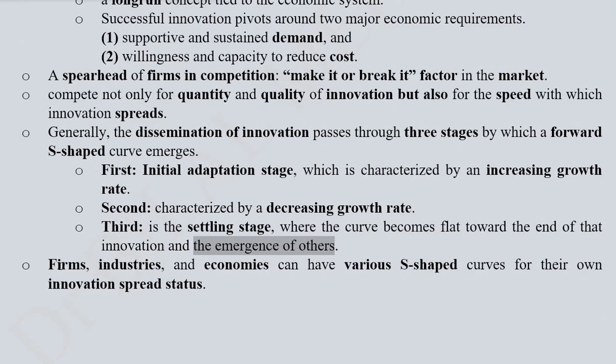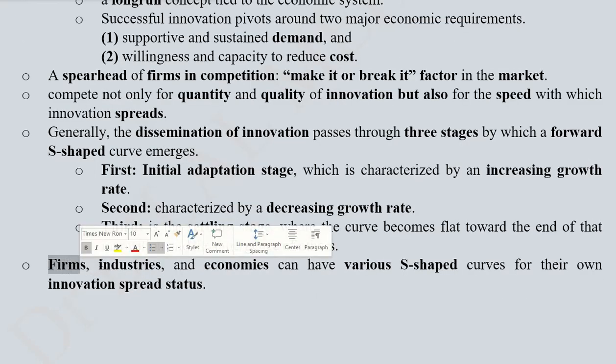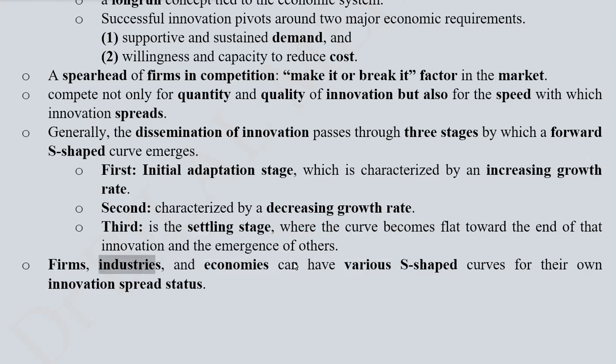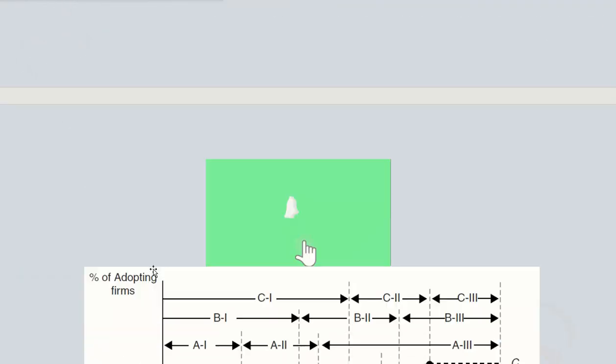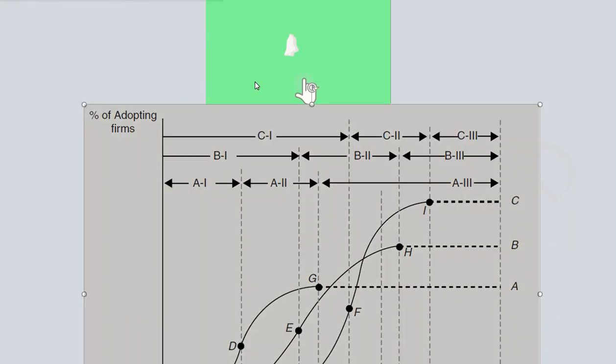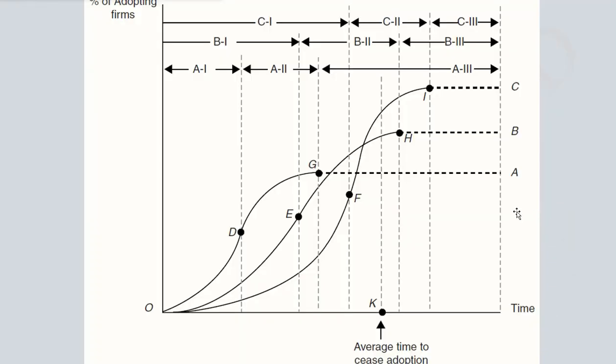Now we know that there are various firms and various industries and economies, so due to a lot of variety, we can expect various S-shaped curves in the analysis. So let us see one of the diagrams that is going to guide us about how this pattern can occur.